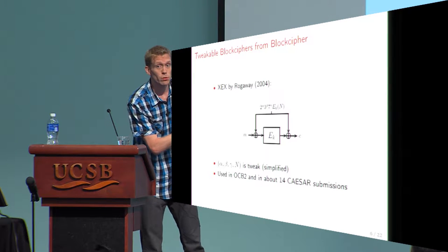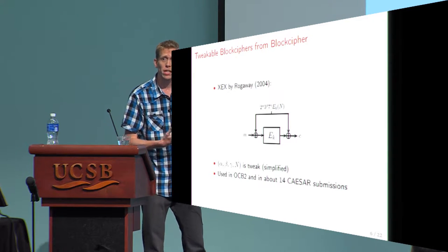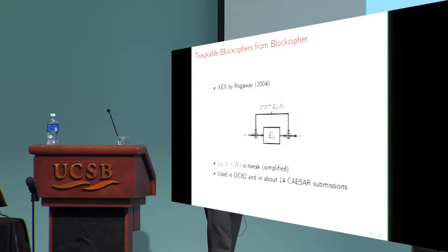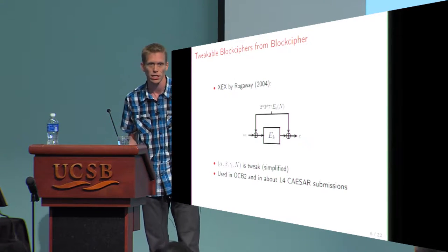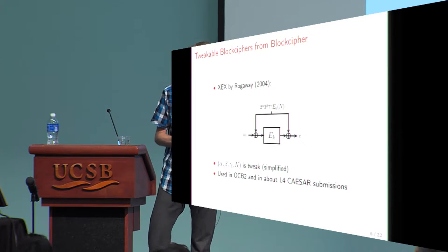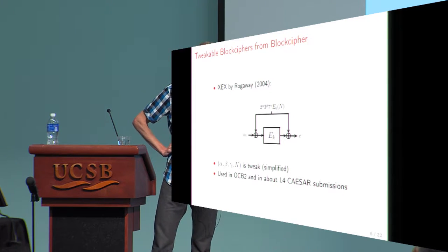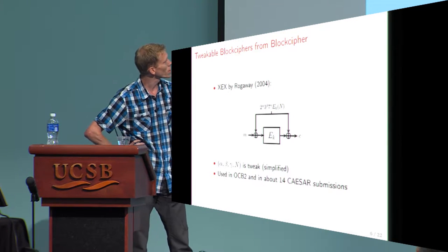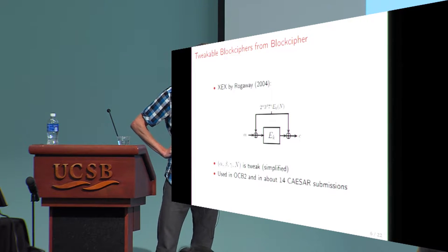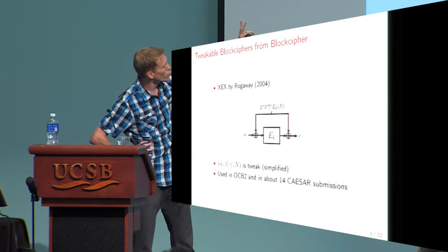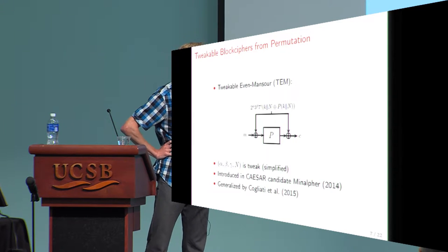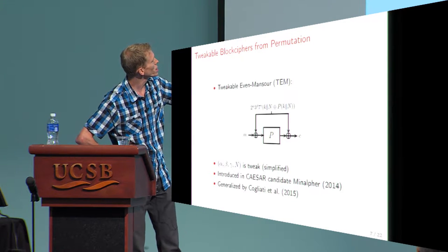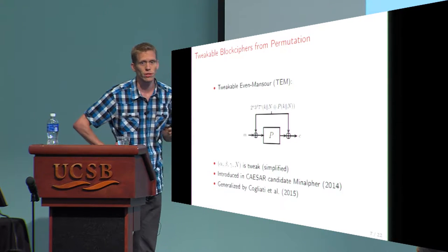This is a block-cipher-based approach, but there is a current trend towards permutation-based designs. This was already apparent in the SHA-3 competition with Keccak, the permutation-based hash function. Also, in the CAESAR competition, there are quite some permutation-based designs. It is possible to transform this to a permutation-based setting. In 2014, the Minalpha team introduced the tweakable Even-Mansour construction.